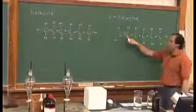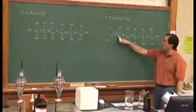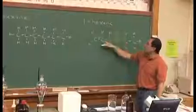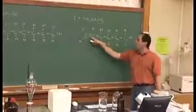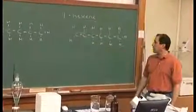One telling us where the location is of something special. Hex, six carbons, and the E-N-E tells us we have a double bond. So after carbon number one, we have ourselves a double bond.